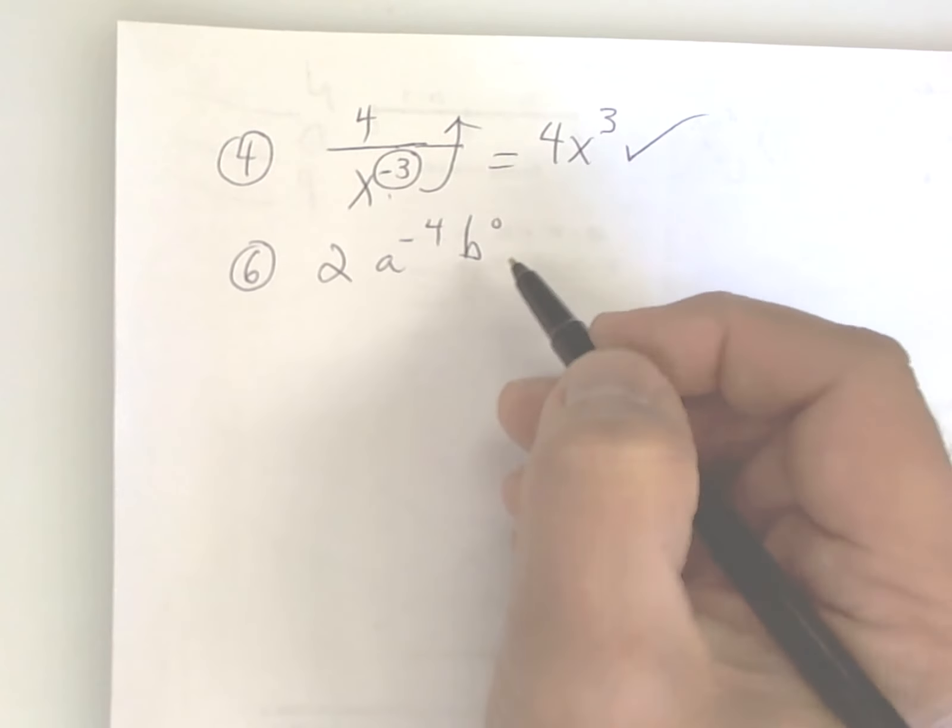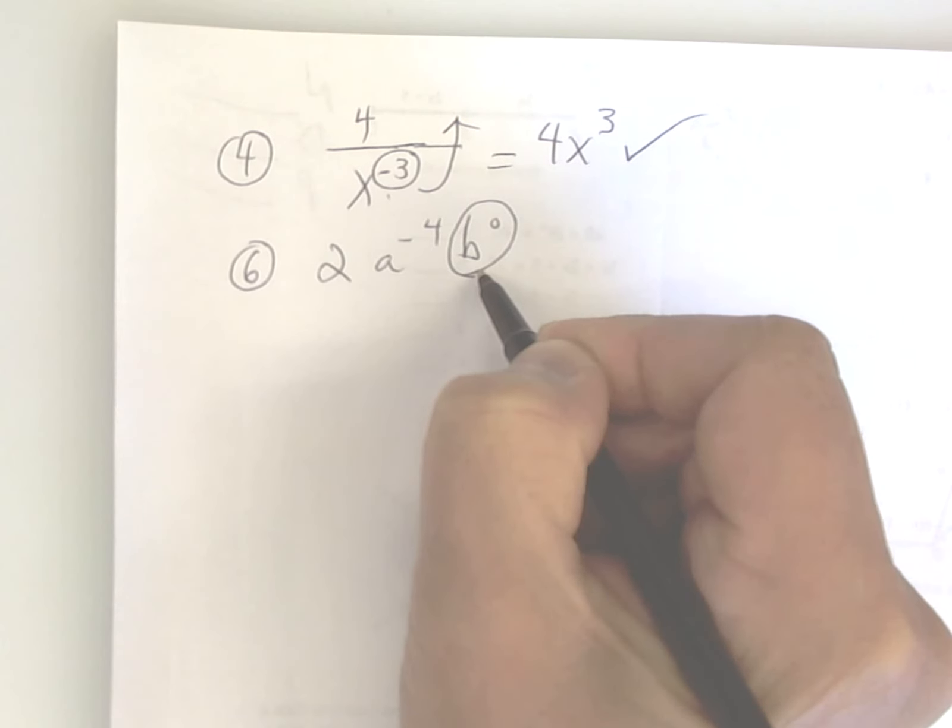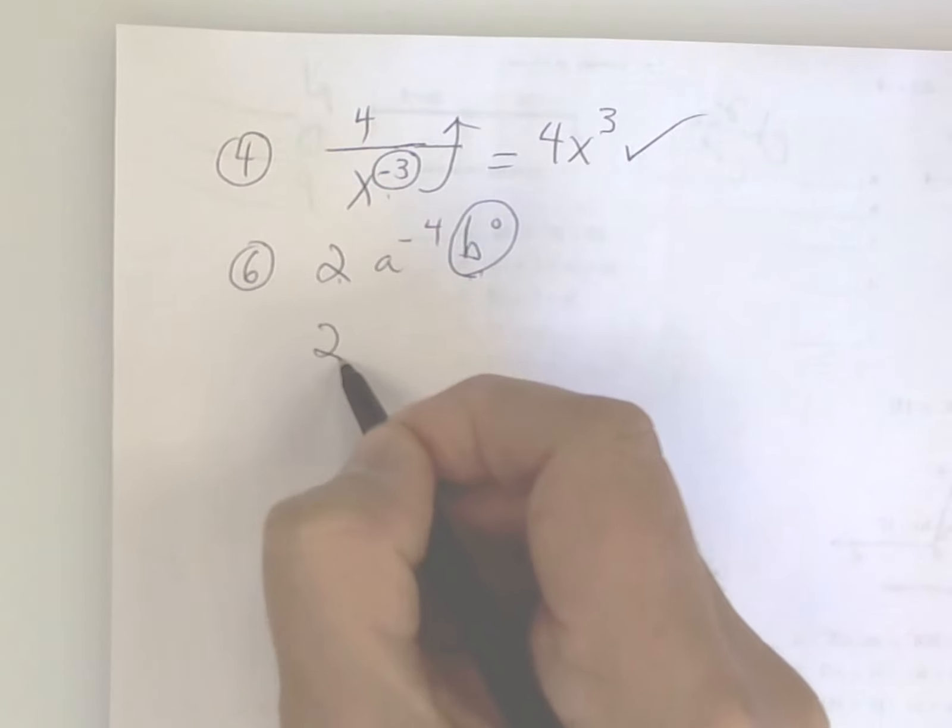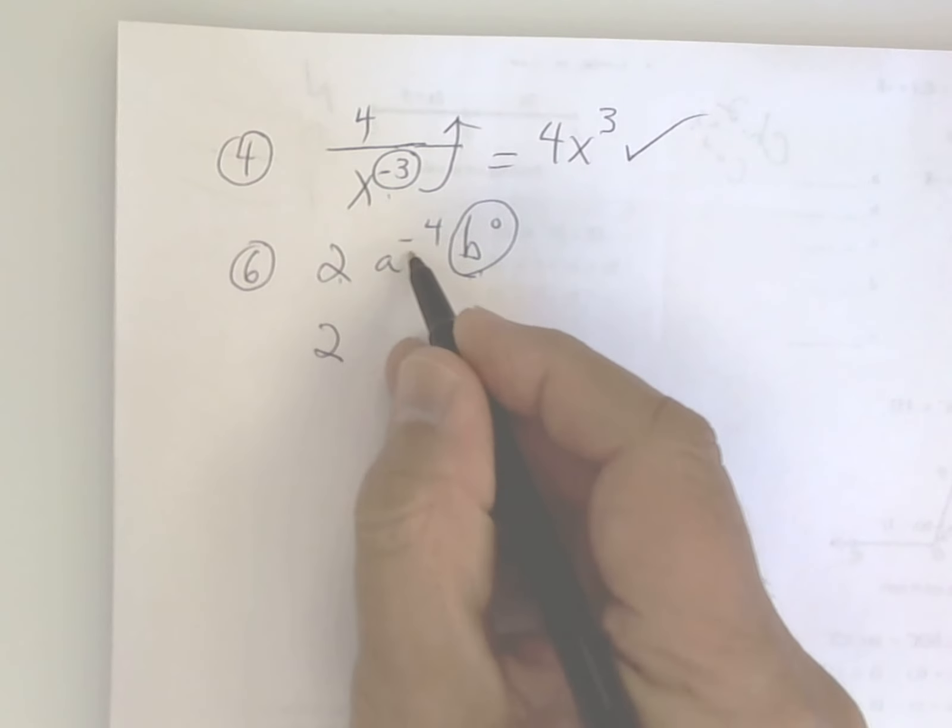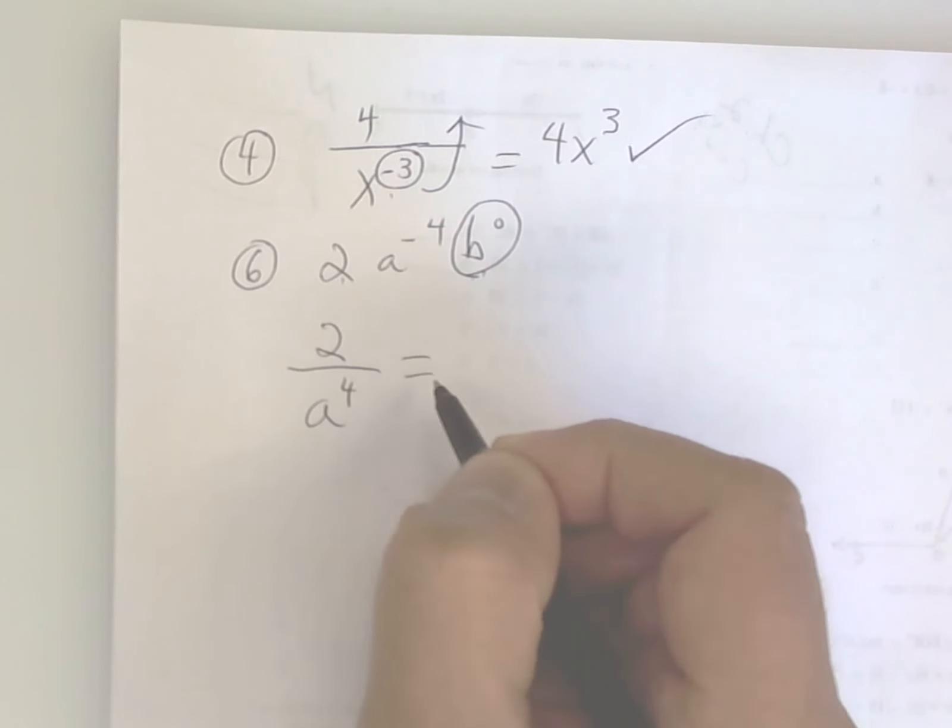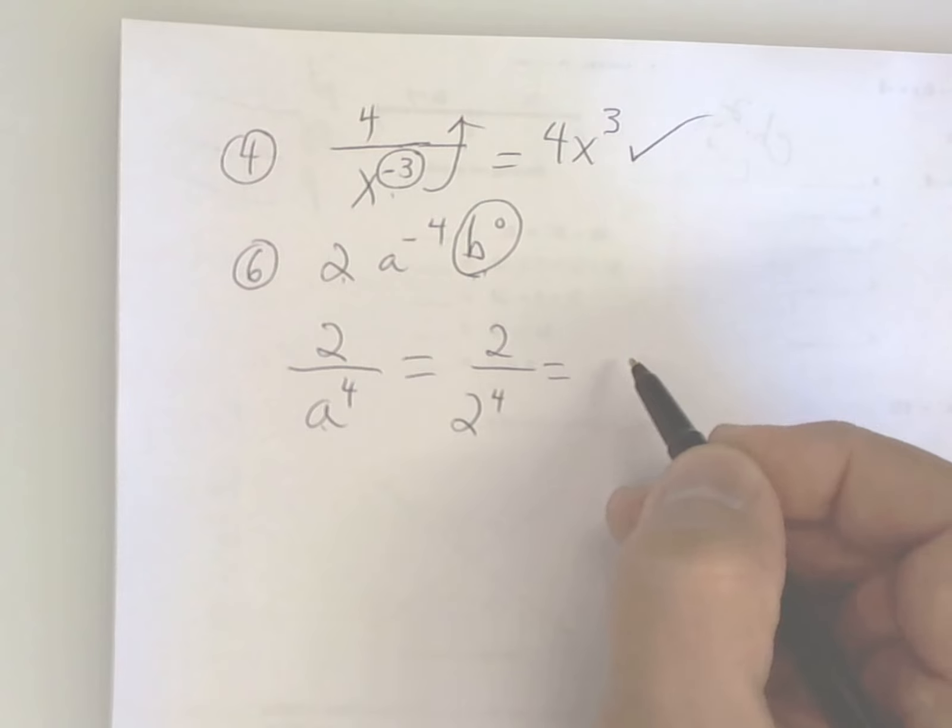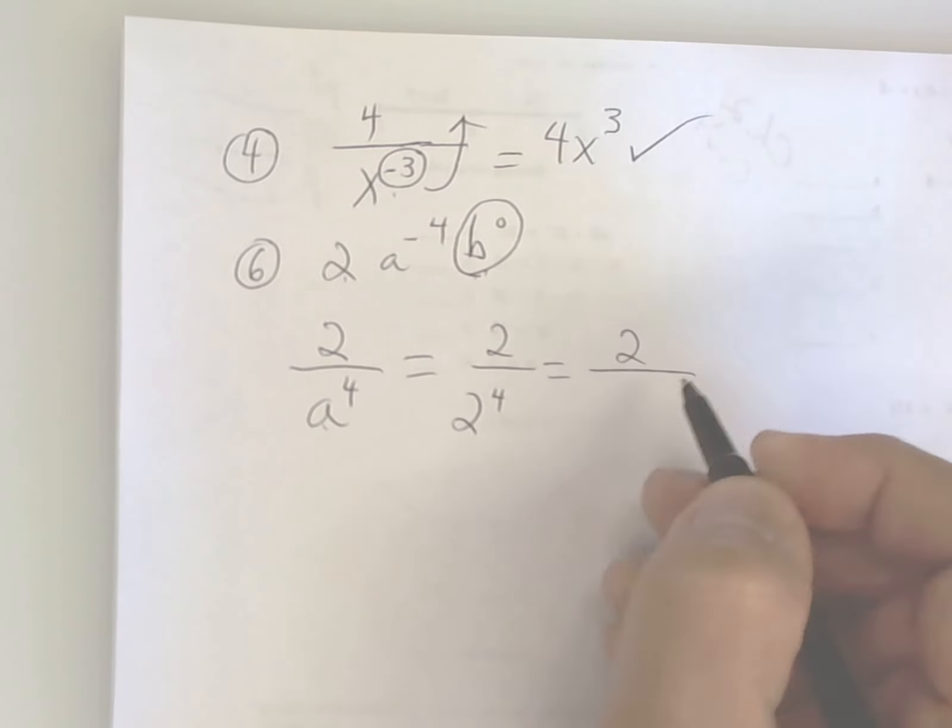Okay, first of all, anything to the zero power is 1, so this right here is equal to 1, and 1 times 2 is 2. So this breaks down to 2. See how that's a to the negative 4? Drop that one down and it becomes a positive 4. And since they tell you a is 2, substitute a 2. So you're going to get 2 to the fourth power. Now 2 to the fourth power means this: 4 of them, but this one cancels, so you're left with 1, 2 times 2 is 4, 4 times 2 is 8. The answer is 1 over 8.